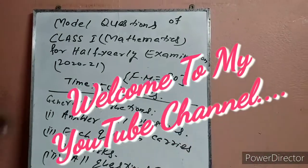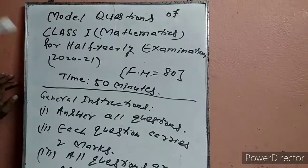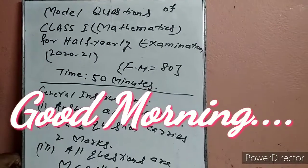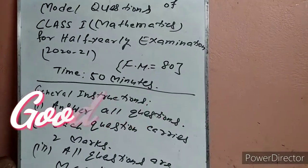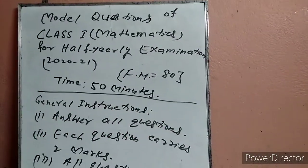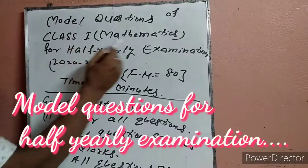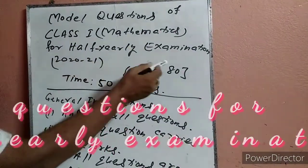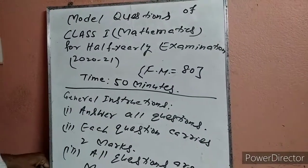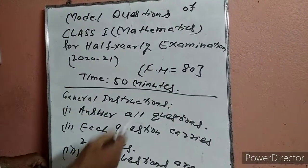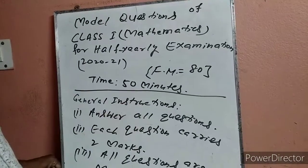Good morning, my dear students of class 1. My name is Suho Singh and I am your Mathematics teacher. Today I am going to present to you the model questions of class 1 Mathematics for half-yearly examinations 2020 and 2021. Full marks are 18, time 50 minutes.